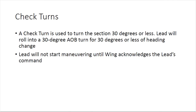The first type of turn we'll talk about is a check turn — very basic. You use a check turn when you're going to turn the section 30 degrees or less. You just roll into a 30-degree angle of bank turn for the 30 degree or less heading change. For a check turn, lead would say something like 'Lion left 060,' and the wingman responds with 'two.' That response is more than just acknowledgment — it's also the command of execution. The wingman saying 'two' is basically saying 'go,' and the lead will not execute the maneuver until wing says two.